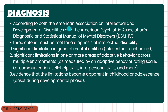For diagnosis, according to both the American Association of Intellectual and Developmental Disabilities and the American Psychiatric Association's DSM, three criteria must be met: significant limitation in general mental abilities such as intellectual functioning; significant limitation in one or more areas of adaptive behavior such as communication, self-help skills, and interpersonal skills; and evidence that limitations became apparent during childhood or adolescence.